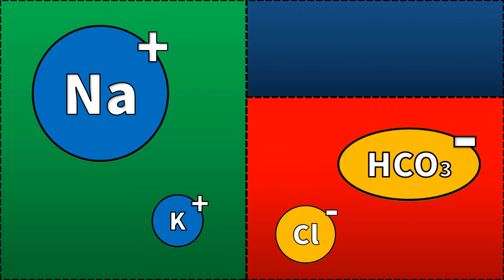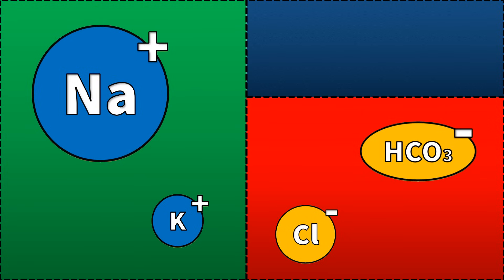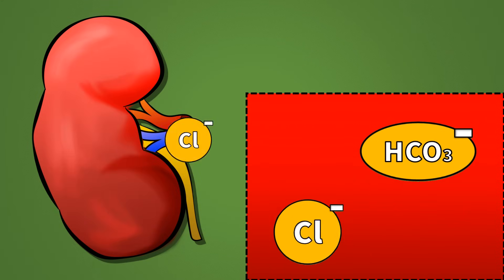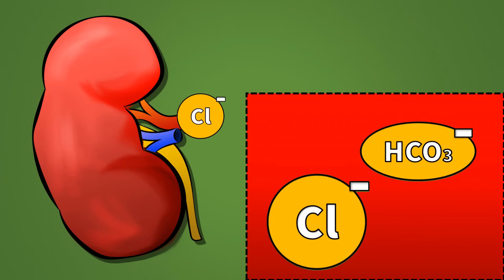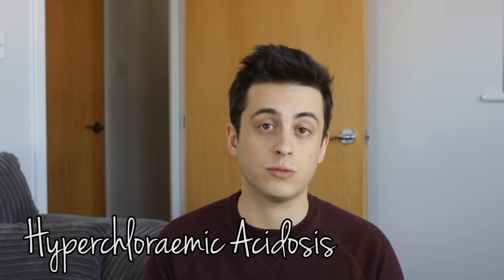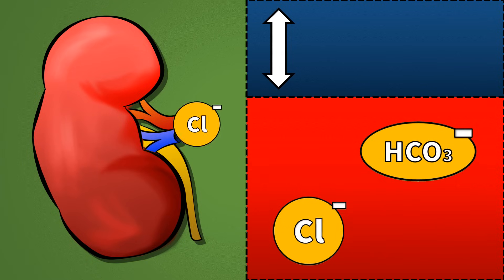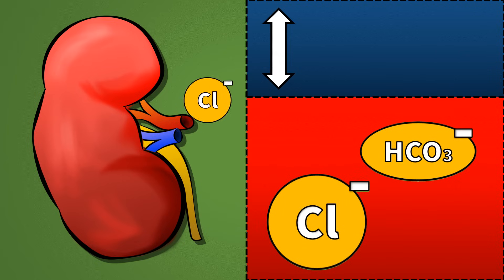What about a normal anion gap acidosis? This is a little bit more straightforward. Essentially, it's due to bicarbonate loss. Bicarb falls and its negative charge is replaced not by those organic acid anions in the mystery box, but by chloride. The kidneys compensate for bicarbonate loss by increasing chloride reabsorption, keeping serum electroneutral. A normal anion gap acidosis can therefore also be referred to as a hyperchloremic acidosis, because the levels of chloride will have gone up. Anion gap remains normal, with the same amount of negative charge accounted for by the anions in our red box — just a little less bicarb and a little more chloride.